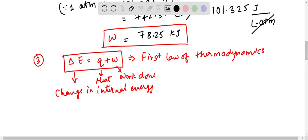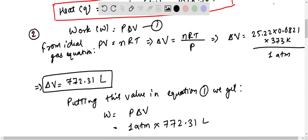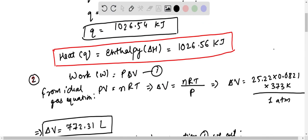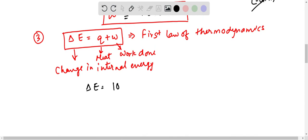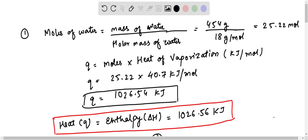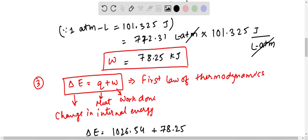Now further we will solve it. We will get delta E equals to Q we have found out. What is the value? This is Q, so this will be 1026.54 is the value of Q. And this we will add, in this we will add 78.25. Was it in KJ? Yes, it was also in KJ, so we can write here simply. Work done we have found out was also in KJ.